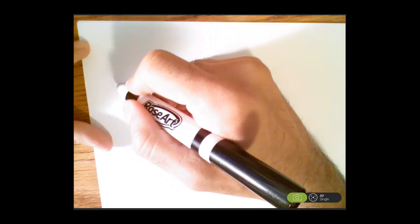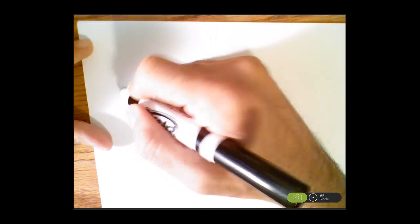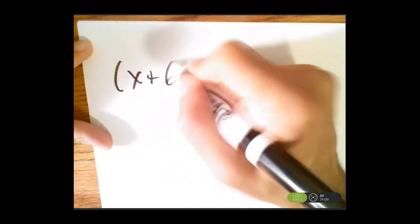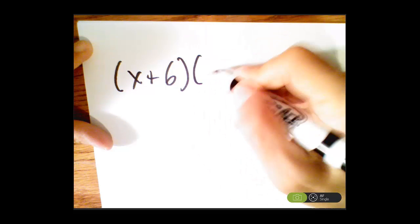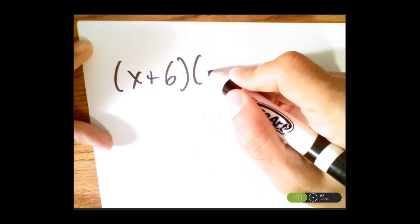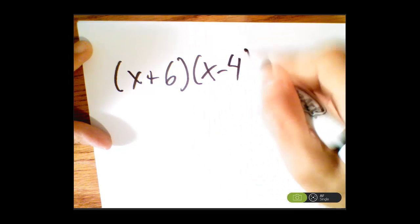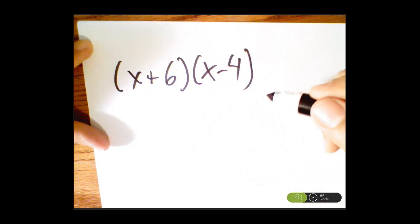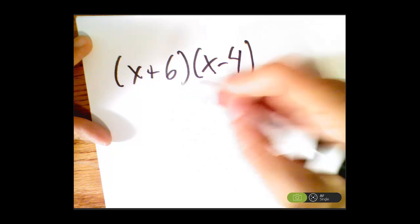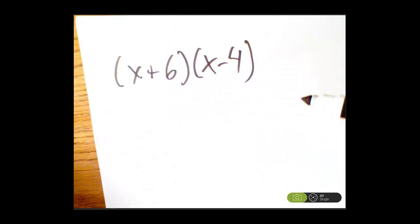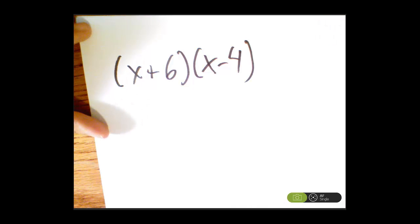So let me show you another way of doing it without foiling. If I'm multiplying two binomials, like x plus 6 times x minus 4 — now we've already talked about the FOIL method, but we're not going to do that this time. This time, let's go ahead and break it apart and do it another way.